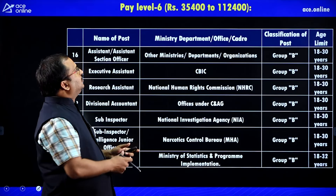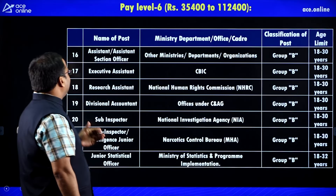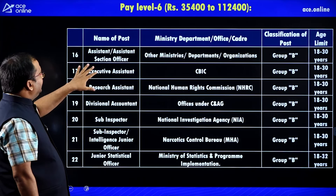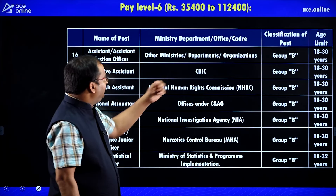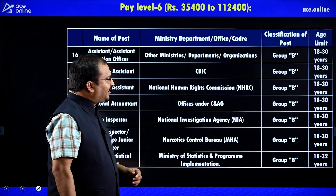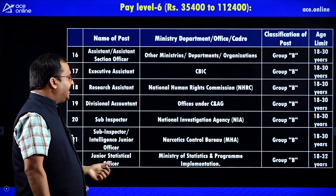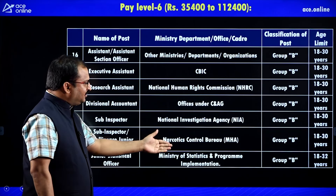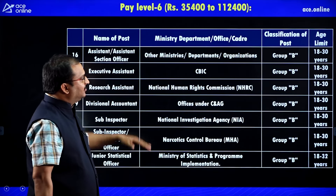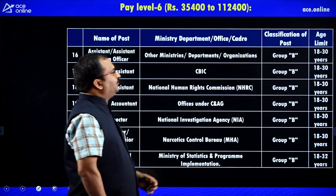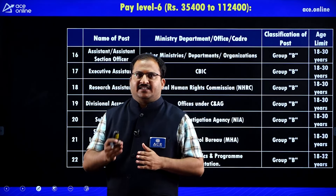Pay Level 6 has a pay band of ₹35,400 to ₹1,12,400. Posts include Assistant Section Officer in other ministries, departments and organizations, Executive Assistant CBIC, Research Assistant in National Human Rights Commission, Divisional Accountant under C&AG, Sub Inspector NIA, Sub Inspector Intelligence Junior Officer in Narcotics Control Bureau, and Junior Statistical Officer in Ministry of Statistics and Programme Implementation. The age limit for some posts is 18 to 30 years and for some posts it is 18 to 32 years.